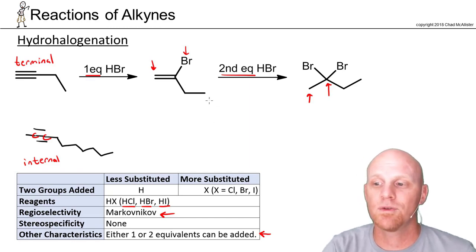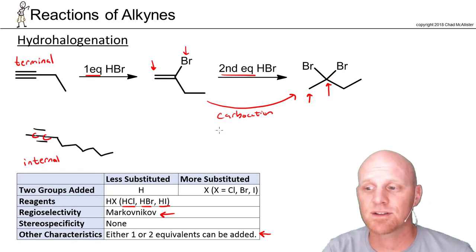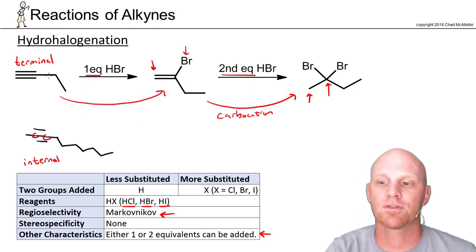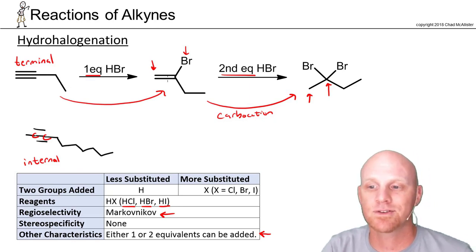One thing to note, we do know that for the second equivalent adding, we're going to go through a carbocation intermediate, which means we might have to worry about rearrangements. But the mechanism is less well understood in how we get from the alkyne to the alkene. The carbocation you'd form would be pretty unstable, which makes it unlikely that it even forms.